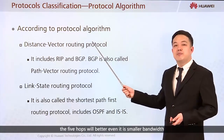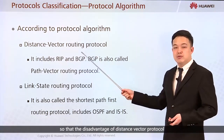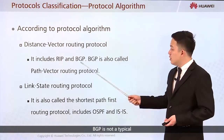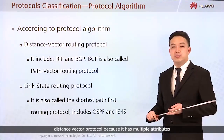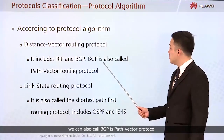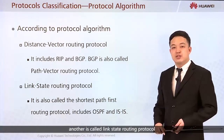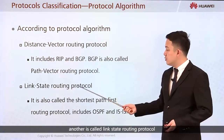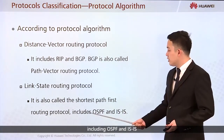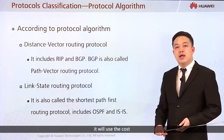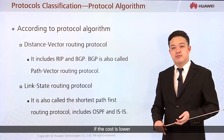Even if the five-hop path has smaller bandwidth, it will still be selected — that's the disadvantage of the distance vector protocol. BGP is not a typical distance vector protocol because it has multiple attributes; we can also call BGP a path vector protocol, which is better than distance vector. Link State Routing Protocol is also called the shortest path first routing protocol, including OSPF and IS-IS. It uses cost to calculate the best path — if the cost is smaller, it will be selected.